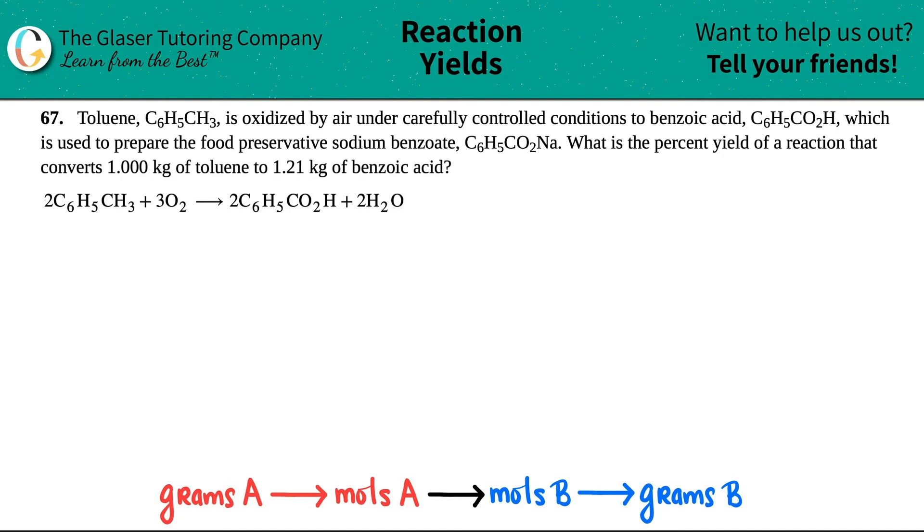Number 67, toluene, which is C6H5CH3, is oxidized by air under carefully controlled conditions to benzoic acid, which is C6H5CO2H, which is used to prepare the food preservative sodium benzoate, C6H5CO2Na. What is the percent yield of a reaction that converts 1.000 kilograms of toluene to 1.21 kilograms of benzoic acid?